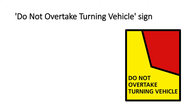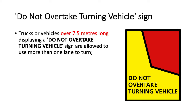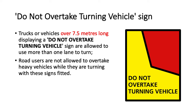Do not overtake turning vehicle sign. Trucks or vehicles over 7.5 metres long displaying a 'do not overtake turning vehicle' sign are allowed to use more than one lane to turn. Road users are not allowed to overtake heavy vehicles while they are turning with these signs fitted.